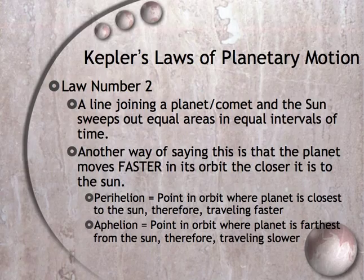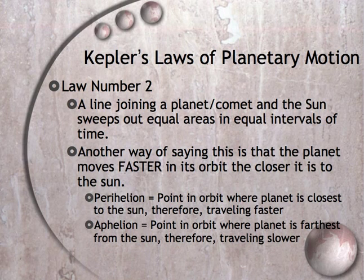Law number two says that a line joining a planet or comet and the sun sweeps out equal areas in equal intervals of time. What that really means is the planet moves faster in its orbit when it's closer to the sun. We do ask that you know these two words: perihelion and aphelion.